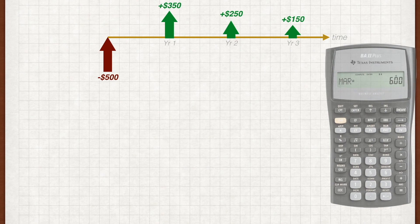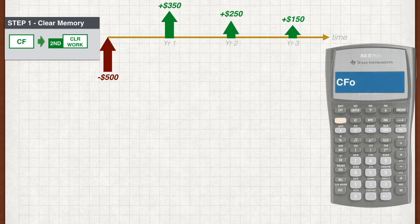The first step is to clear out the memory in your calculator. Don't forget this step as there could be residual values stored inside the cash flow memories which could affect your calculations. To clear the memory, go into cash flow mode by pressing CF and then clear by pressing second clear work.